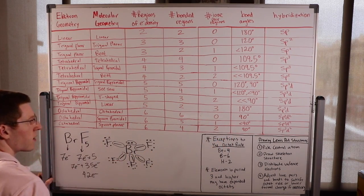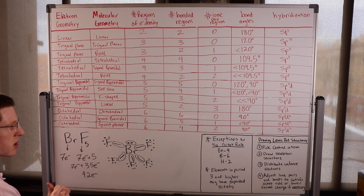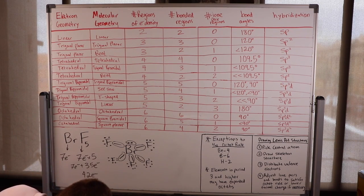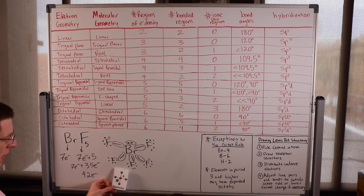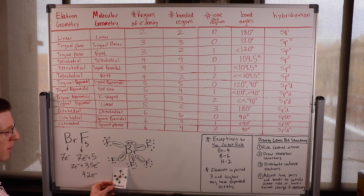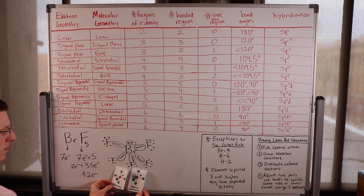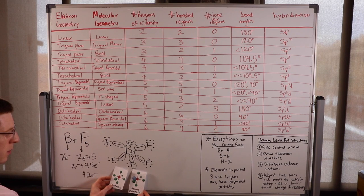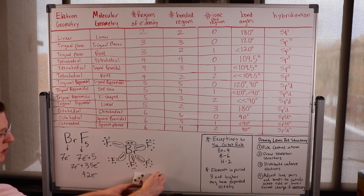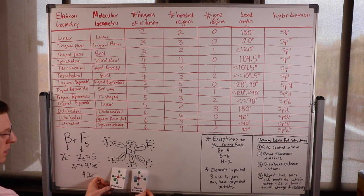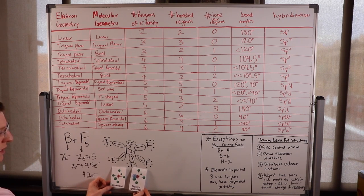The lone pair squishes the bond angles down a little, and the hybridization remains SP3D2. We started with octahedral electron geometry, then removed one bond and made it into a lone pair. Now it looks like a square pyramid — where one face is the base — and that's where it gets its name. The lone pair pushes down on those bond angles, making them less than 90 degrees.